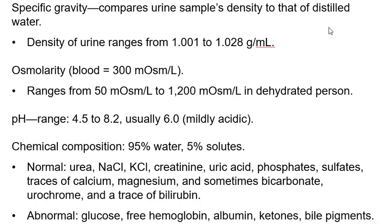Here is a table of what you should find in normal urine. Specific gravity ranges from 1 (very dilute) up to 1.028 grams per milliliter. Osmolarity: blood is about 300 milliosmoles; urine can be as low as 50 milliosmoles if you're drinking way too much, or as high as 1200 milliosmoles if you're very dehydrated.